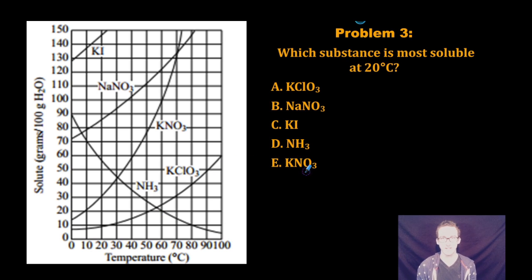Problem number three says which substance is most soluble at 20 degrees Celsius. So at 20 degrees Celsius, I'm just going to go as far up as I can. Potassium iodide, you're our winner, most soluble at 20 degrees Celsius.